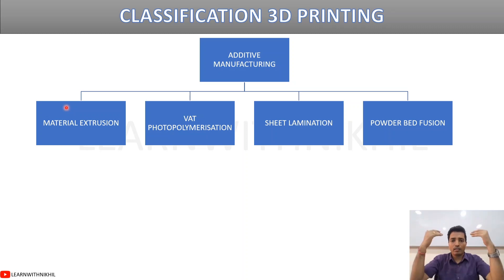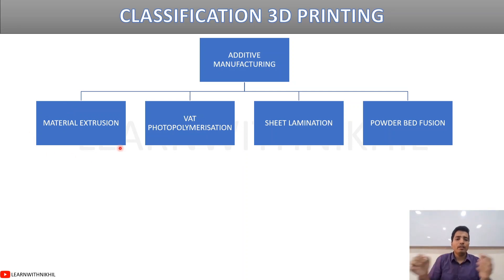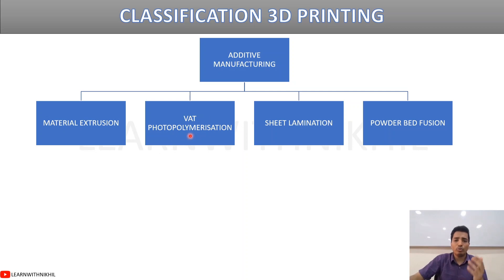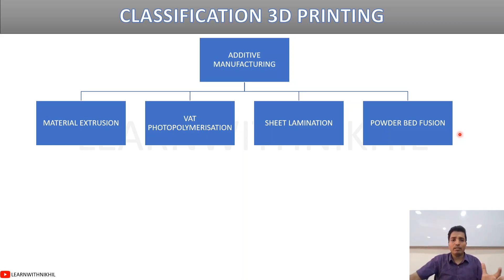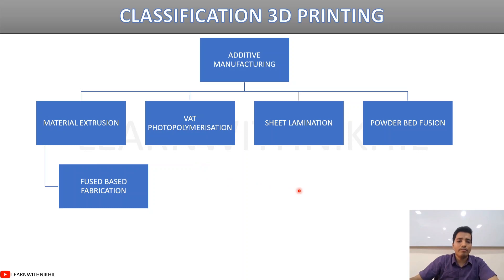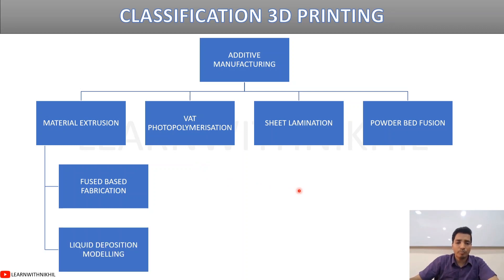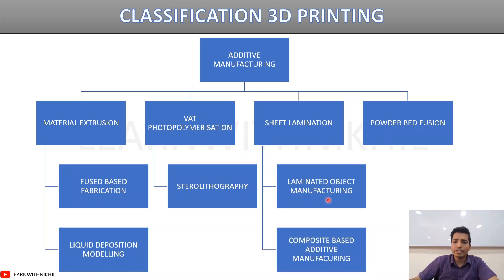Material extrusion uses a solid filament; vat photopolymerization uses a liquid with a laser for curing; sheet lamination uses sheets of metal or other materials; and powder bed fusion uses powdered material to print metals. Within material extrusion you have fused-based fabrication and liquid deposition modeling; vat photopolymerization includes stereolithography; sheet lamination includes laminated object manufacturing and composite-based additive manufacturing; and powder bed fusion includes selective laser sintering.